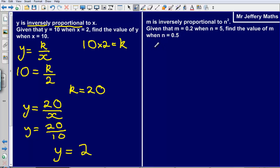So again, I'm just going to write, because it is inversely proportional, I'm going to write that m is equal to k over n squared. Then I'm going to substitute in my values that I already know. So I know that m is equal to 0.2 when n is equal to 5. So I can say that 0.2 is equal to k over 5 squared.